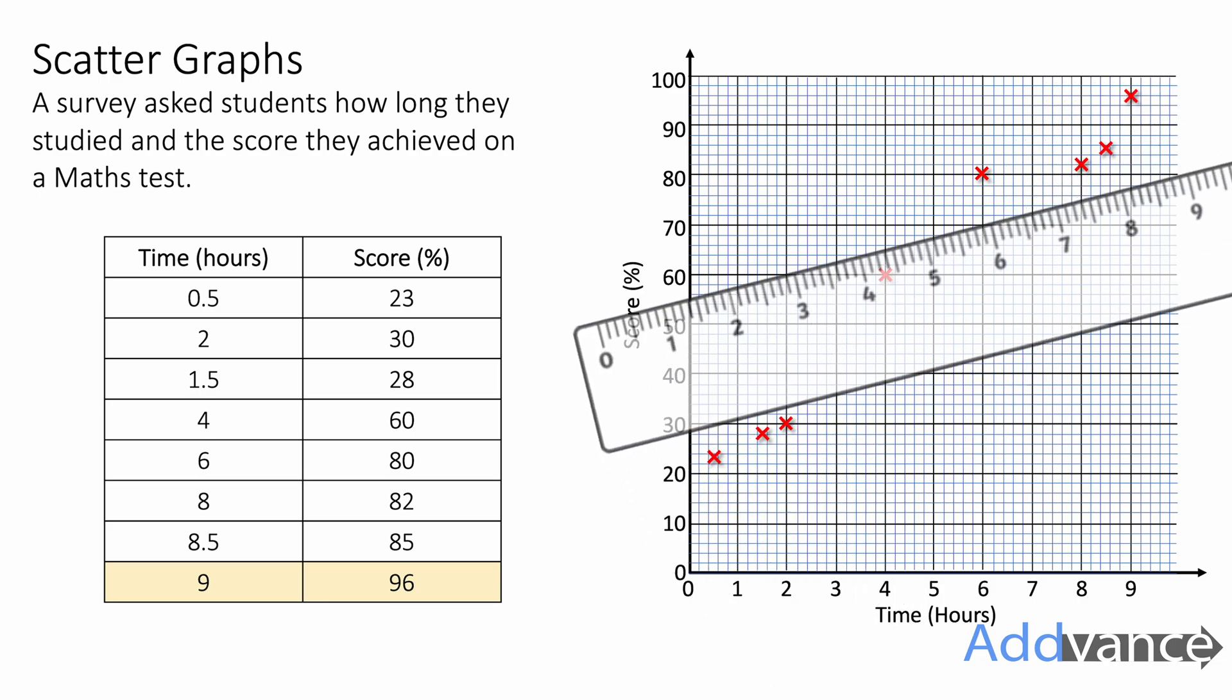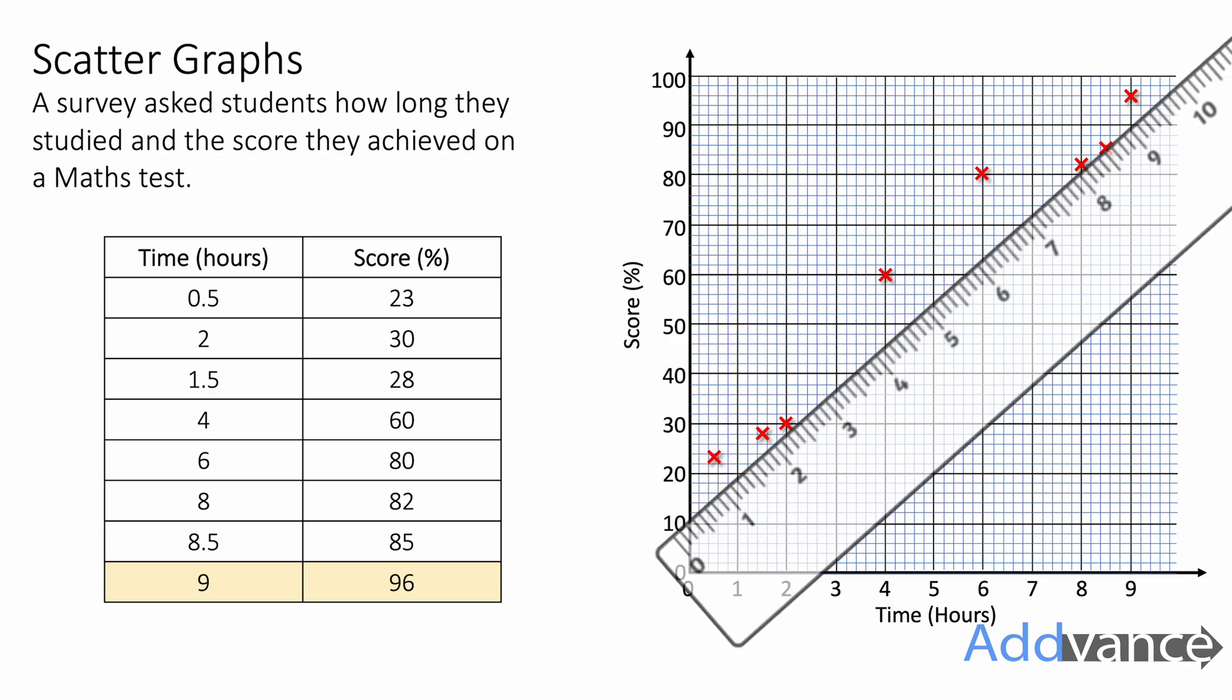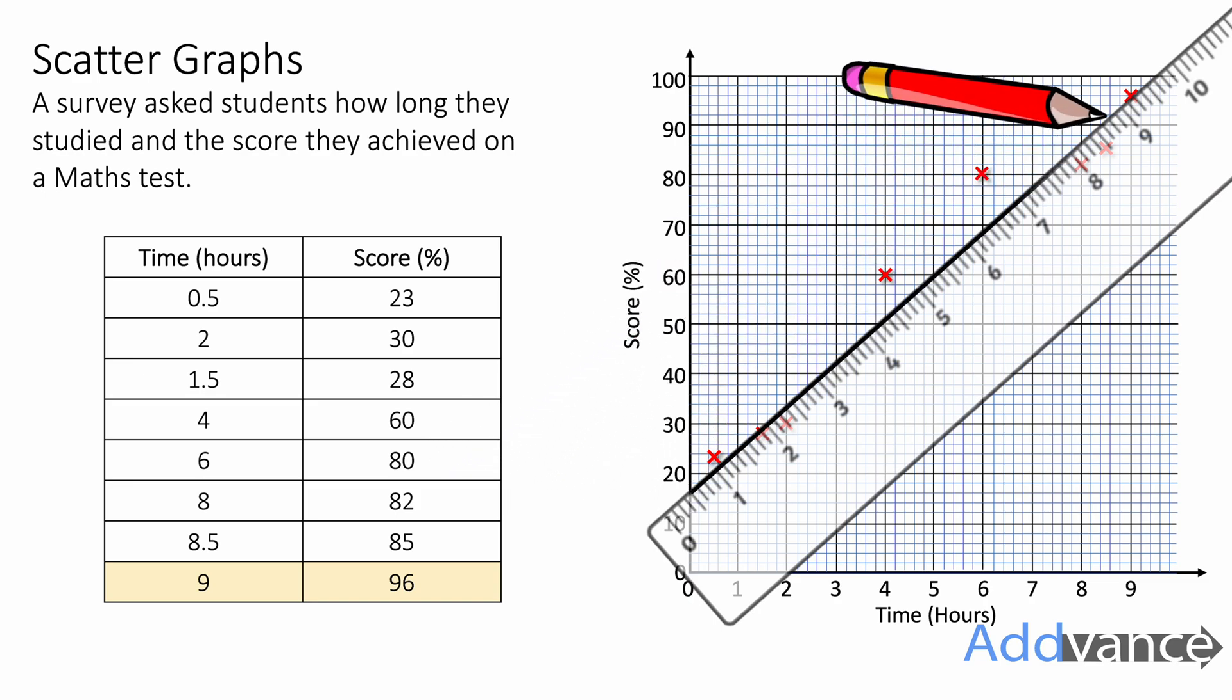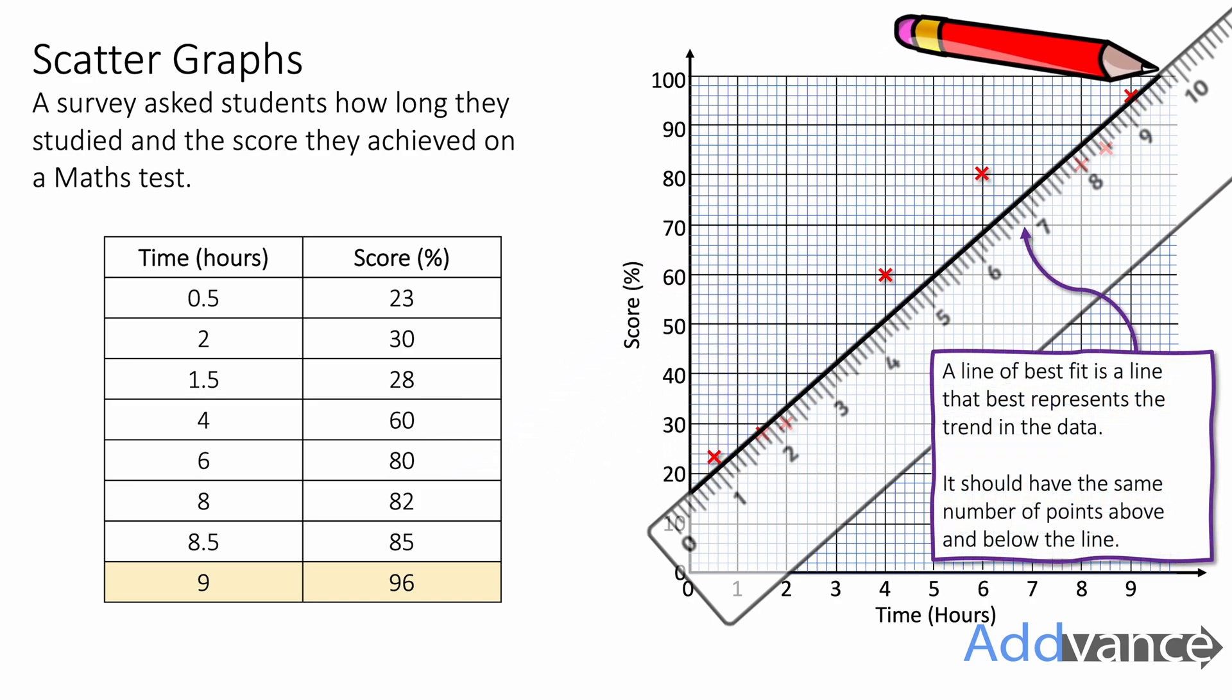This ruler is too slanty. It's not following the exact same direction of the data. Whereas here this ruler is following the direction of the data but it's a bit too low. We are going to shift it up a bit. And now we've got the ruler in the perfect place. I'm going to draw a line with our pencil. That is the line of best fit.